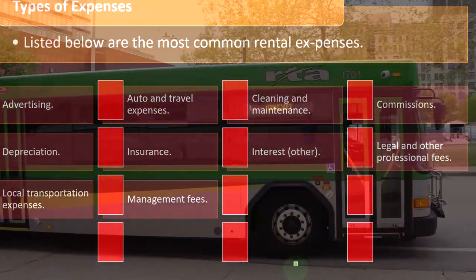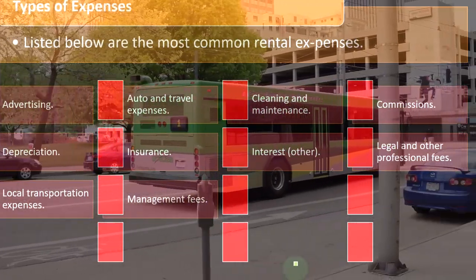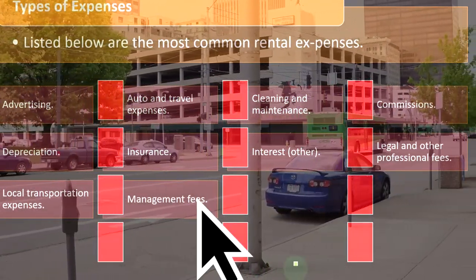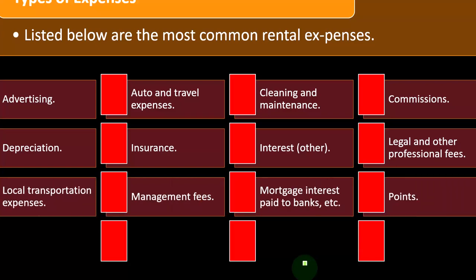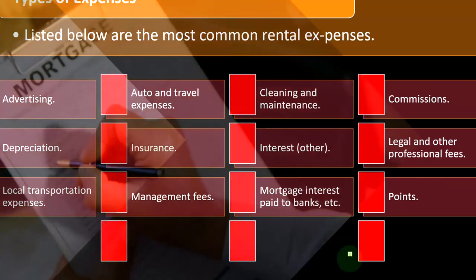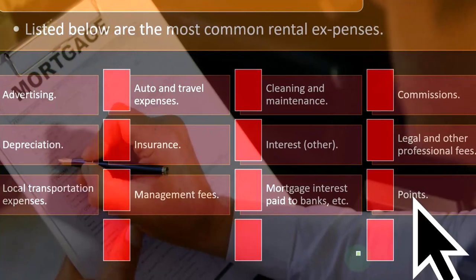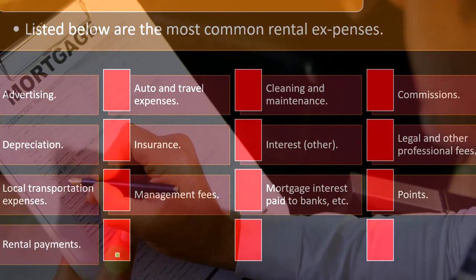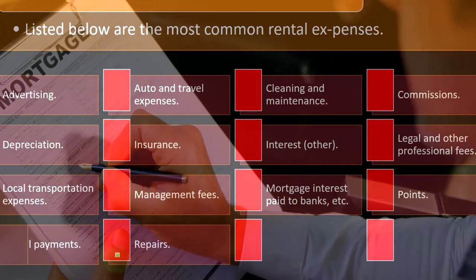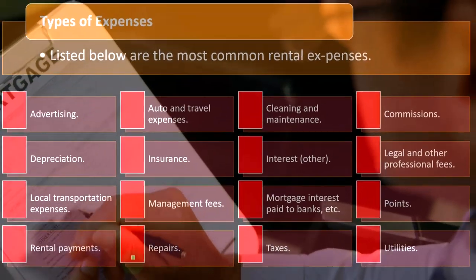That contrasts with interest on, say, a personal car, where the interest would be personal in nature. Legal and other professional fees are a common business expense. Local transportation expenses and management fees are more common to the rental sector, as you might pay management fees as a standard practice in the industry. Mortgage interest paid to banks covers the loan taken out for the rental property. Points coincide with interest in a somewhat messy situation. Rental payments, repairs, taxes, and utilities are also listed.